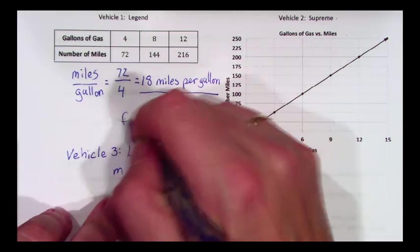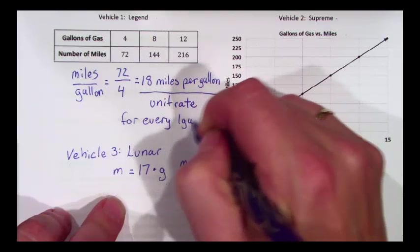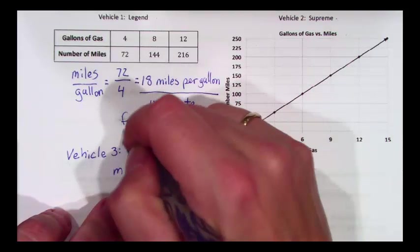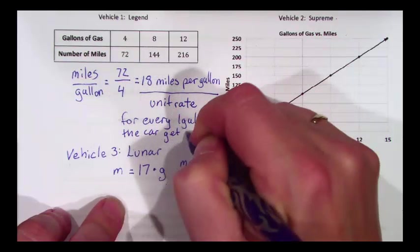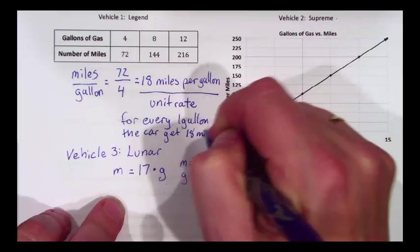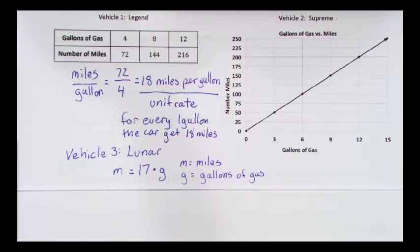It means for every one gallon, the car gets eighteen miles. That's what our eighteen miles per gallon unit rate means.